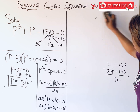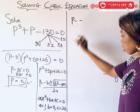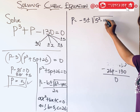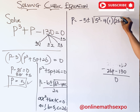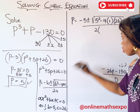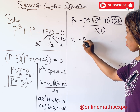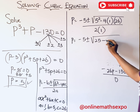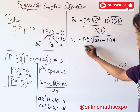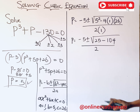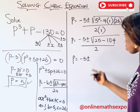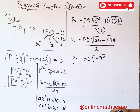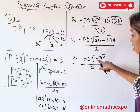Plugging these into the formula: p = (−5 ± √(5² − 4 × 1 × 26)) / (2 × 1). Simplifying: 5² = 25, and 4 × 1 × 26 = 104, so we have p = (−5 ± √(25 − 104)) / 2, which gives p = (−5 ± √(−79)) / 2.